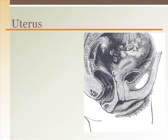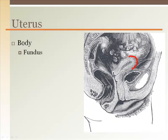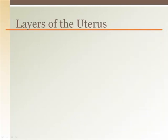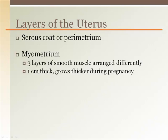The uterus is not positioned straight up but rather tilted forward, making the connection to the vagina closer to a right angle. The large mass of the uterus is the body, with the rounded anterior portion referred to as the fundus. The cervix is the inferior portion of the uterus with an internal opening called the internal os and an outer opening into the vagina called the external os. The uterus is made up of three distinct layers: the outer protective covering is the serous coat or perimetrium, and the bulk of the thick walls is the myometrium, made of three layers of smooth muscle.